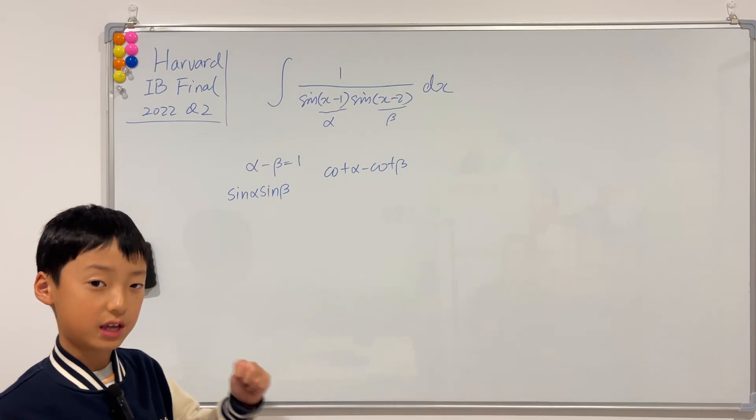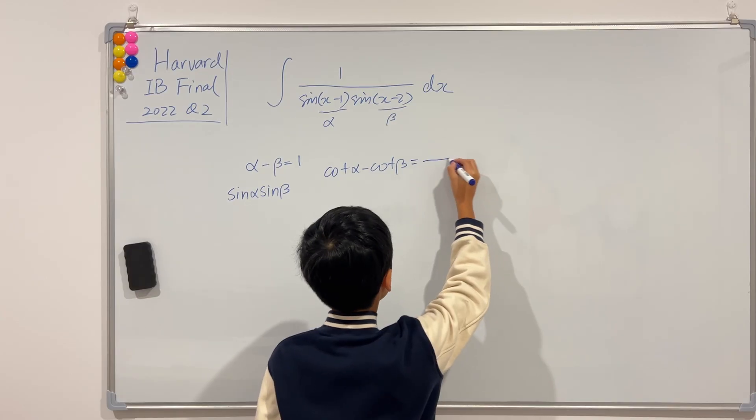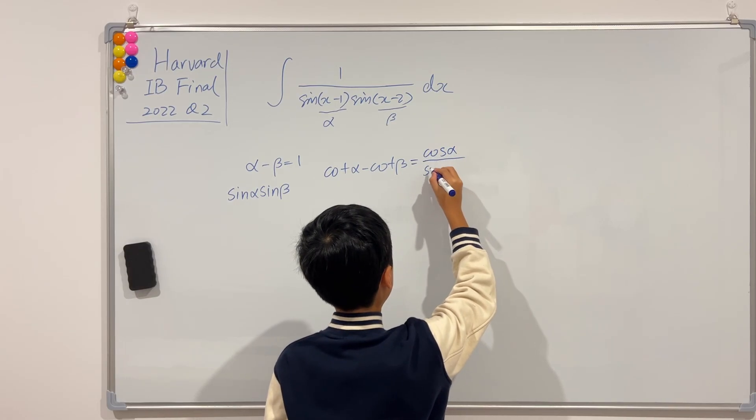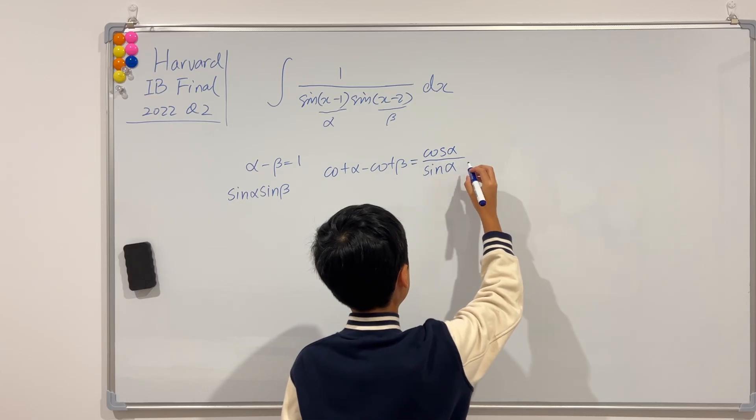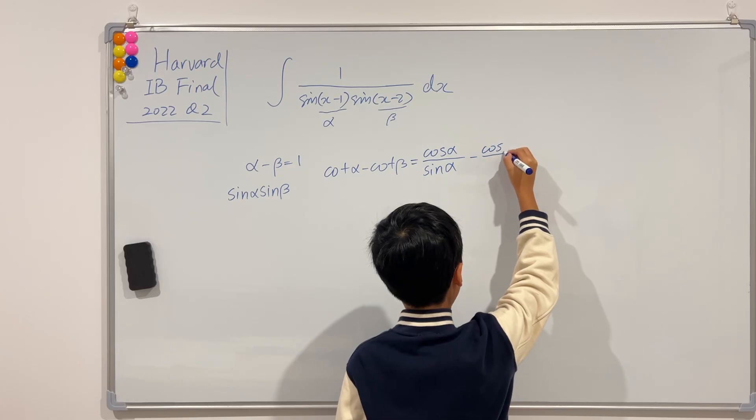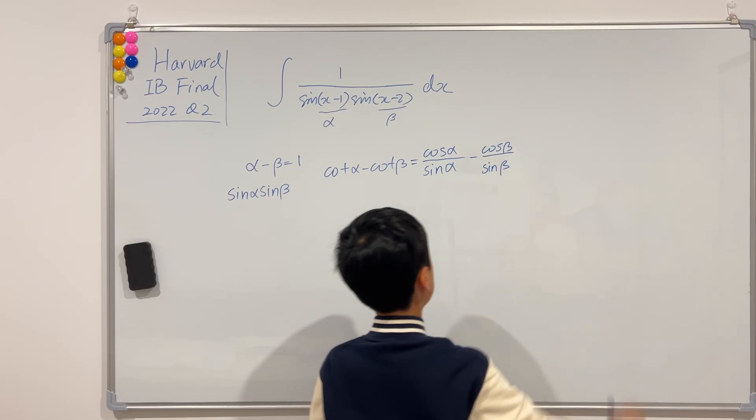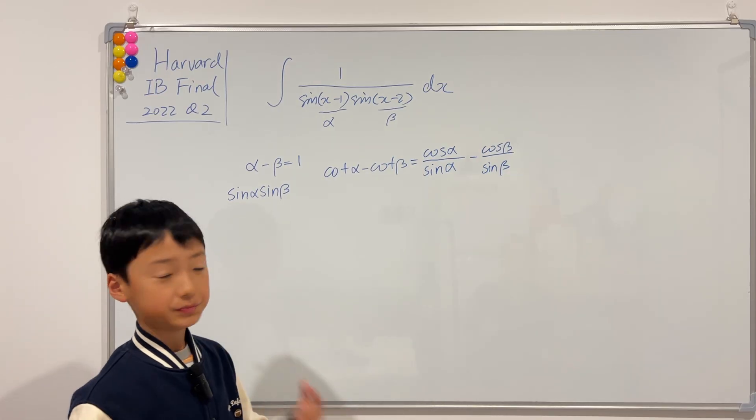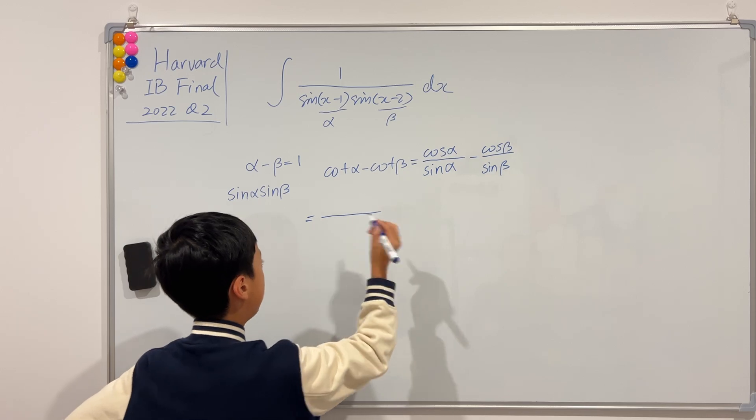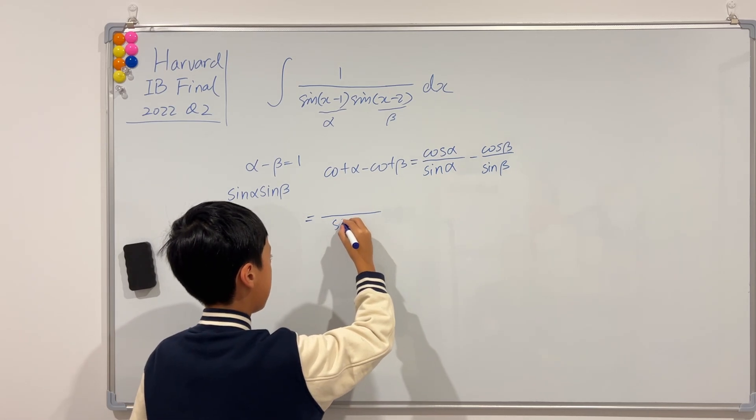So, I'm going to do it once again for you. This will be cosine alpha over sine alpha, and this is minus cosine beta over sine beta. Now this will be equal to, the bottom is obviously this times that, which is sine alpha sine beta.